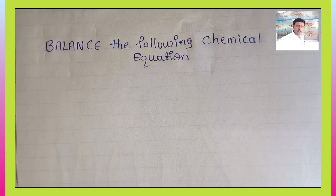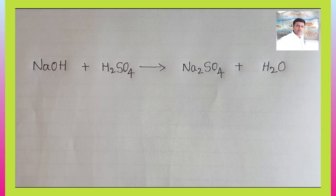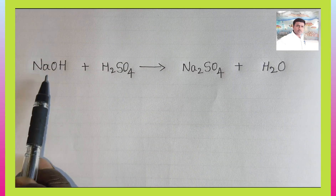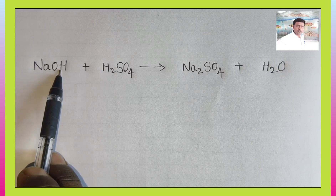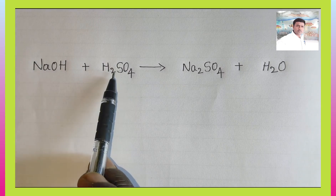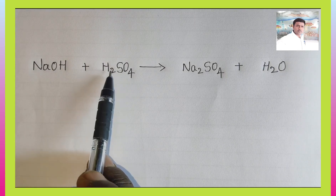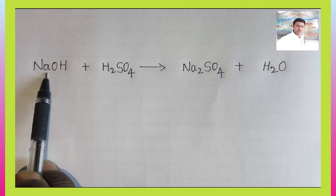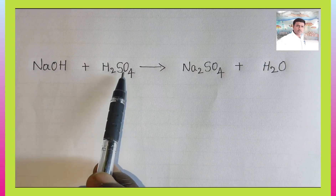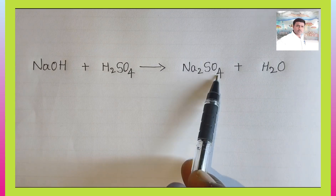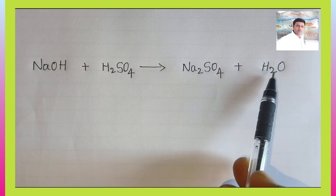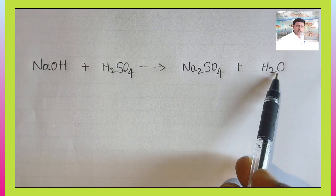Balance the following chemical equation. Consider the equation: NaOH (sodium hydroxide) reacts with H2SO4 (sulfuric acid). This gives sodium sulfate (Na2SO4) plus H2O (water).